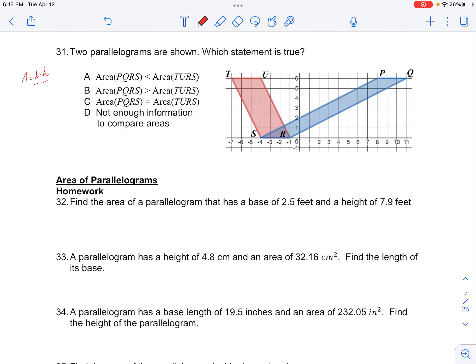Let's see if that's true. TURS has a base of 3 and a height of 6 minus 0, which is 6. Parallelogram PQRS also has a base of 3